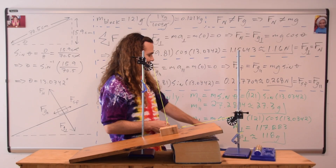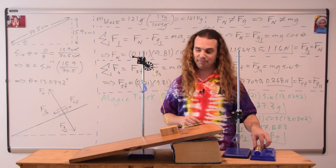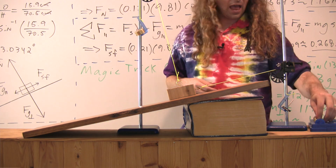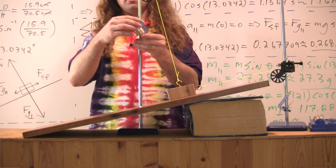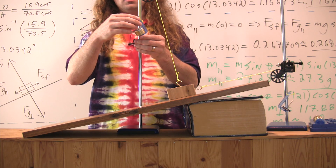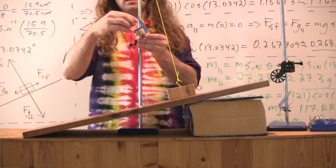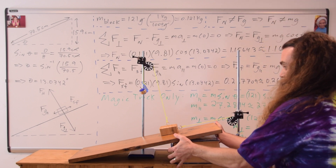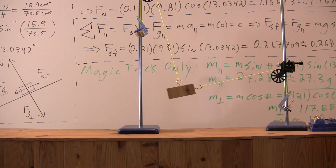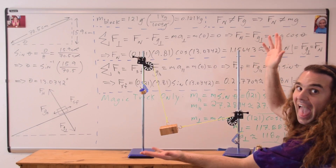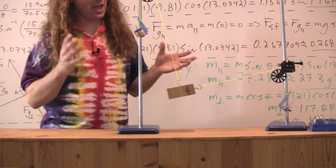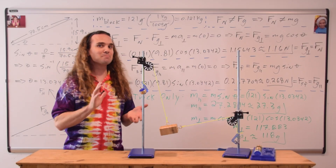Now let's do the perpendicular direction. We need 118 grams. We already have five grams in the five gram mass holder. Adding 100 grams gets us to 105 grams. Adding 10 more gets us to 115 grams. Two more is 117 grams, and one more gram gets us to 118 grams in the perpendicular direction. It might not seem like I have done much until I do this. Ladies and gentlepeople, I present to you a floating block. To be completely honest with you, it's not magic — it's physics.